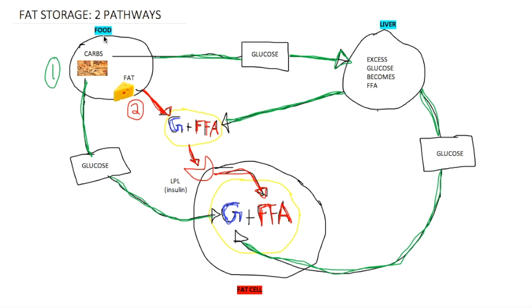The second pathway is through fat. The fat that you eat is going to go to your intestines, get broken up, packaged into chylomicrons. You see this thing in yellow here - glycerol plus free fatty acids. Your body's going to take that, it's going to go through this enzyme lipoprotein lipase, which is going to separate the glycerol from the free fatty acids.